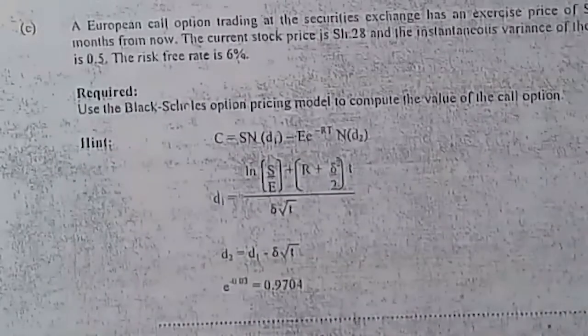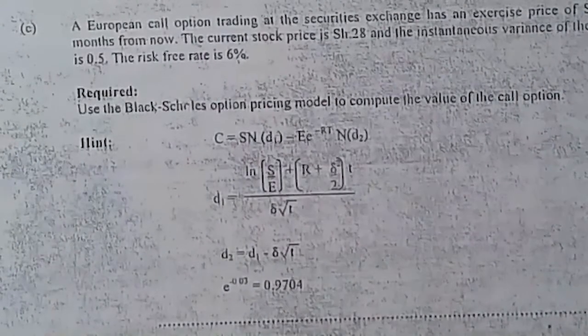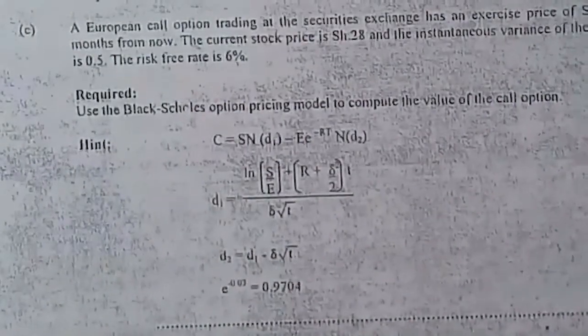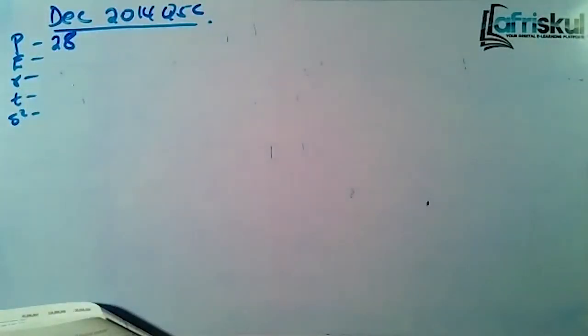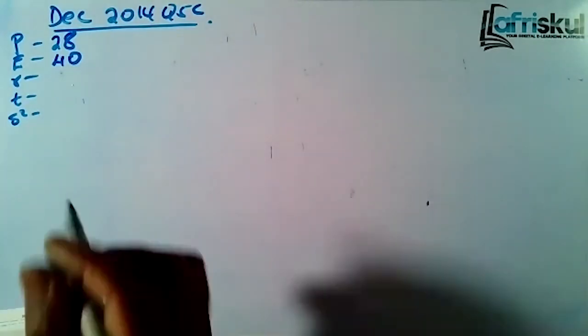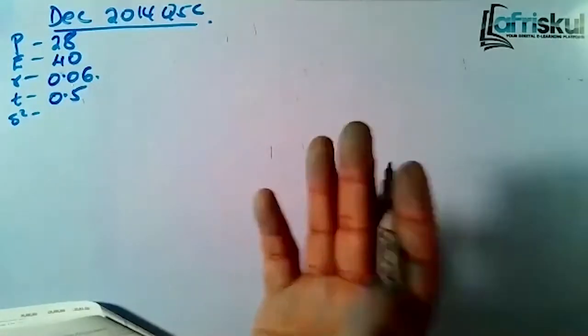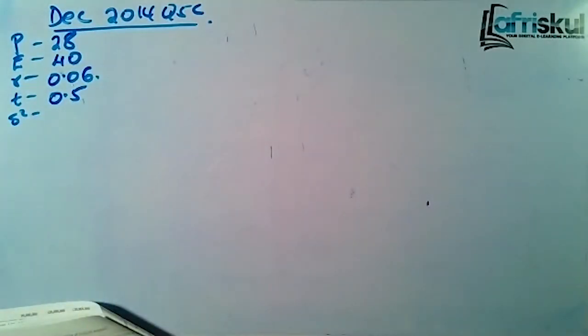We are required to use the Black-Scholes option pricing model to compute the value of the call option. You are given the hint with the formula. So let's do an analysis. We have the market price at 28, exercise price at 40, risk-free rate at 6% which is 0.06, time to maturity six months which is 0.5, and the instantaneous variance of the underlying asset is 0.5.